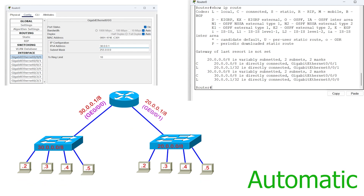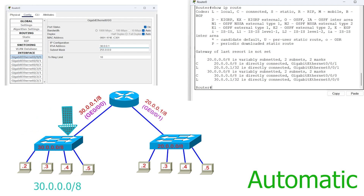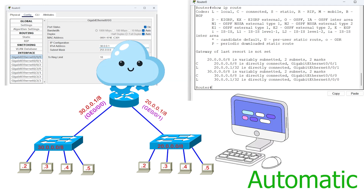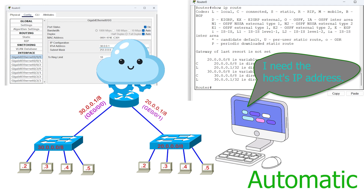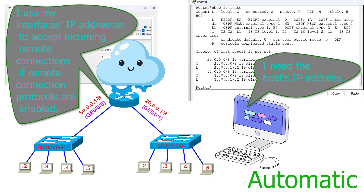For example, in this network, we assign an IP address to the router's interface. The router uses its interface's IP addresses to accept incoming remote connections.